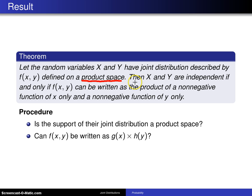But here is another way. X and Y are independent if and only if f(x, y) can be written as the product of a non-negative function of x only and a non-negative function of y only.